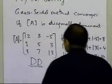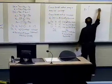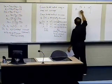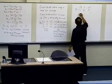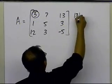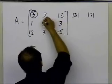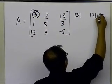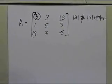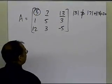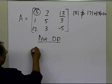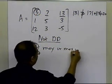Now if you look at the second case, the coefficient matrix is 3, 7, 13, then 1, 5, 3, and 12, 3, minus 5. Taking the diagonal element, which is 3, the absolute value of that, then you take the absolute value of the rest of the elements in that row — 7 and 13 — you add them, it's 20. Is it greater than or equal to? No. It is not greater than or equal to that number. So right in the first row, it tells you that it is not diagonally dominant. So it may or may not converge.